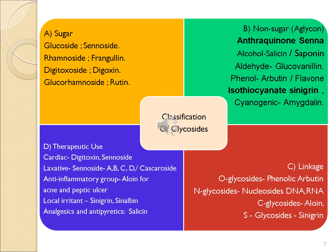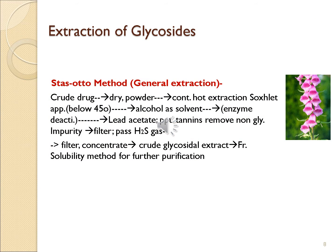The fourth classification is based on therapeutic uses. If the glycoside shows effect on cardiac muscles, they are called cardiac glycoside, example digitoxin. If they show laxative effect, they are called laxative glycosides. If they show anti-inflammatory effect, they are called anti-inflammatory glycoside, for example aloin from aloe leaves. They are also called local irritant glycoside, example sinigrin, and analgesic and antipyretic glycoside, example salicin.